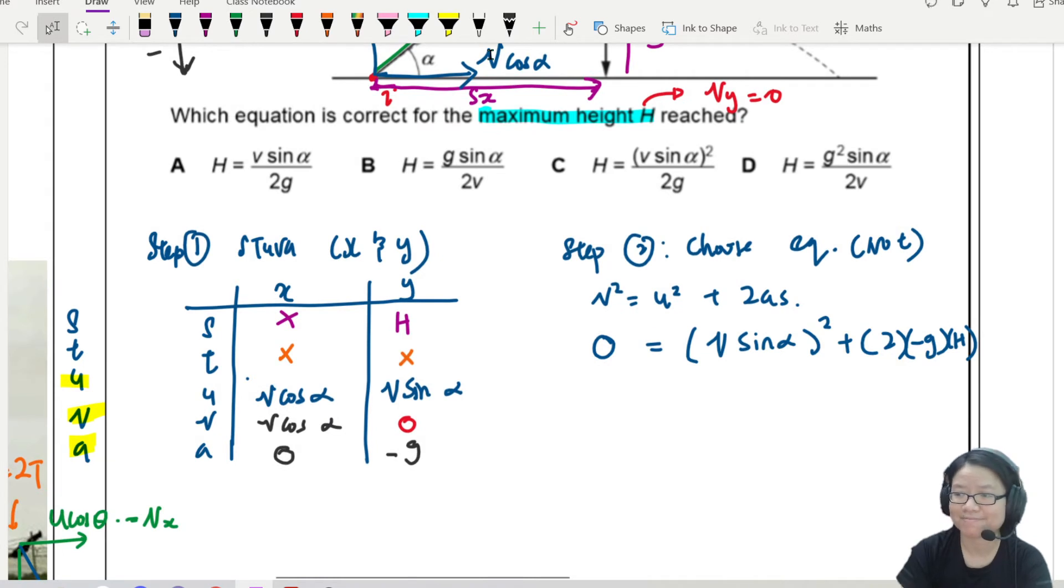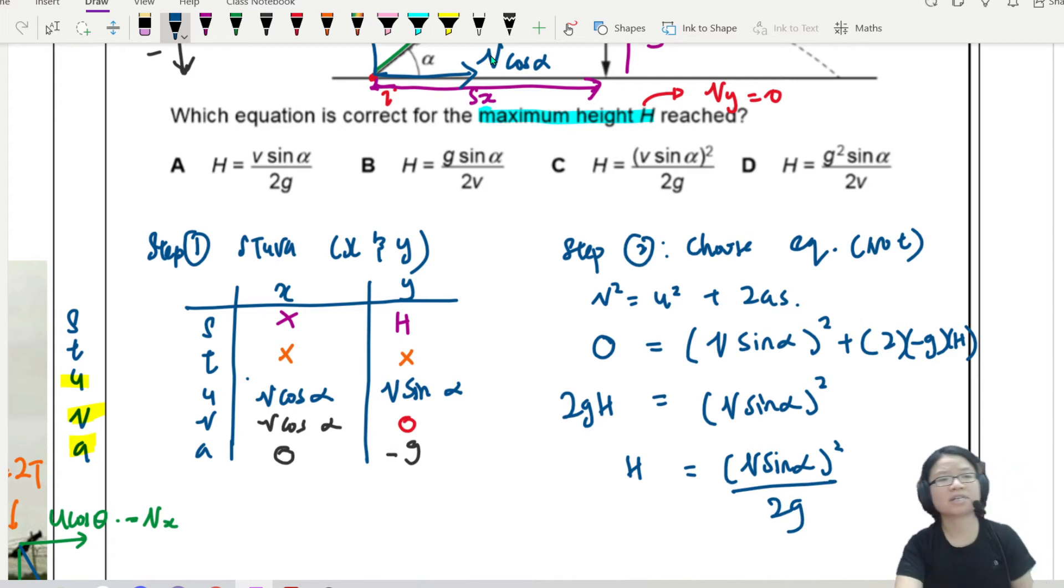So since I'm looking for h, so I'll bring this one over. 2gh = (v sin α)². And then finally, you have h = (v sin α)² / 2g. You see some strange equation. You don't panic. It's just algebra. You can move things around to solve it. So my answer, ladies and gentlemen, would be C.